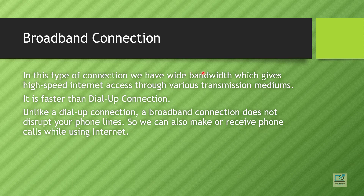Next is broadband connection. In this type we have wide bandwidth. Bandwidth means how many signals we can pass at a time — if the bandwidth is narrow, very few signals can be transmitted; if it is wide, many signals can pass at a time. So in broadband, many signals pass at once, improving connection speed. Broadband gives high-speed internet access and is faster than dial-up. Also, unlike dial-up, broadband allows you to make phone calls and access the internet at the same time.